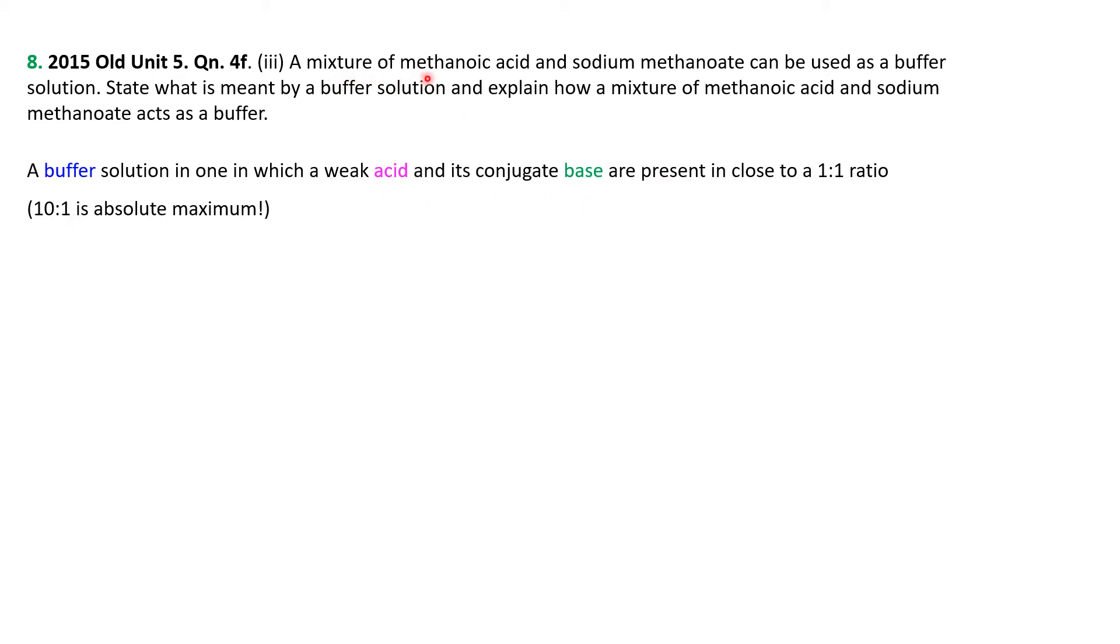We need a weak acid and its conjugate base. Here we've got a mixture of methanoic acid, so that is the HCOOH, and sodium methanoate, while sodium is a spectator ion, so we're just talking about methanoate, which is HCOO minus. If we have a solution that's got this and this in as close to a 1 to 1 ratio as possible, it's a buffer solution, and such a solution has a pH that is resistant to change when other acids or bases are added.